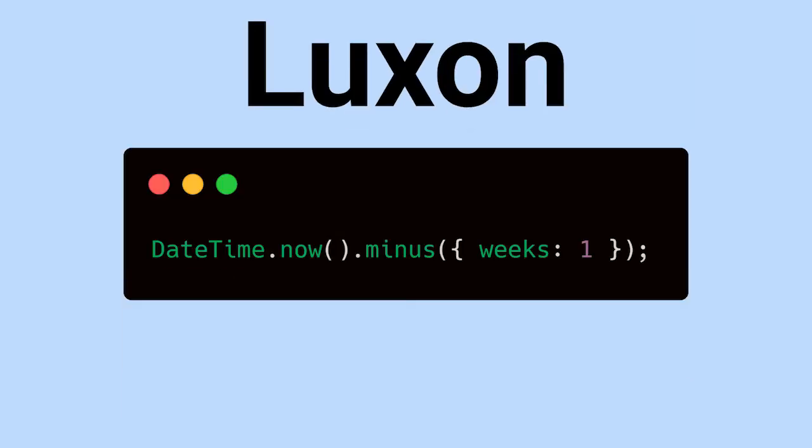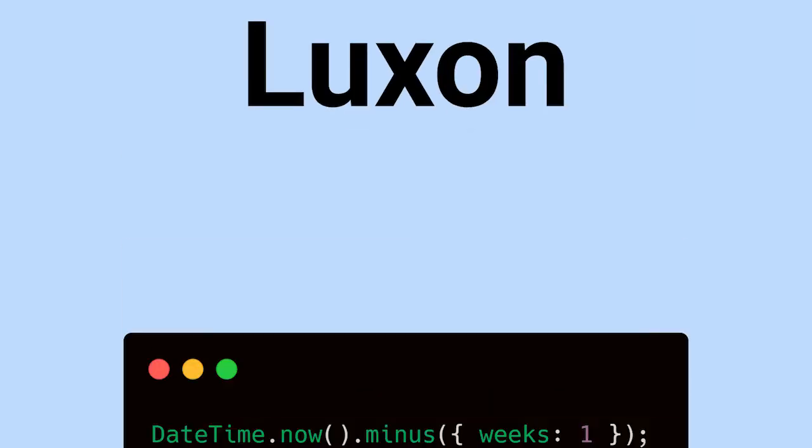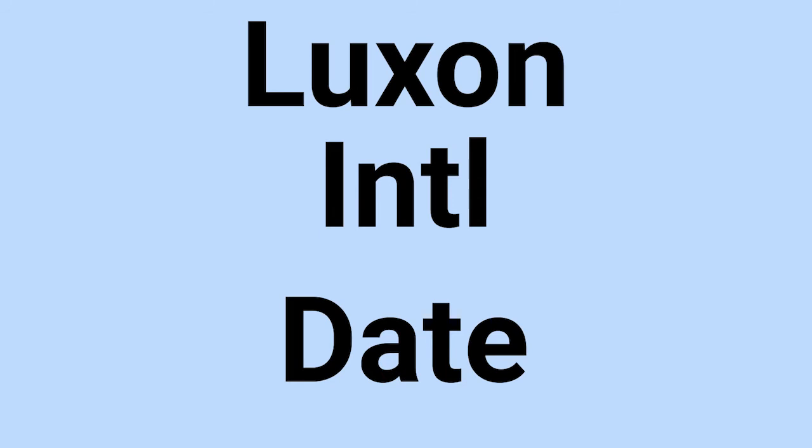Luxon.js is a powerful and modern date and time wrapper library in the same bracket as Moment and date.js. One thing that sets Luxon apart is that it uses the more modern Intl object instead of the usual Date object.